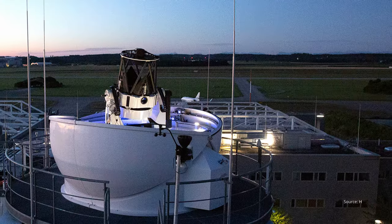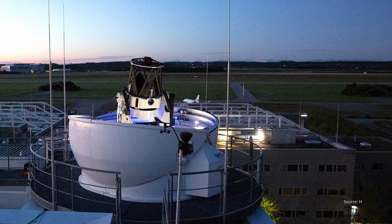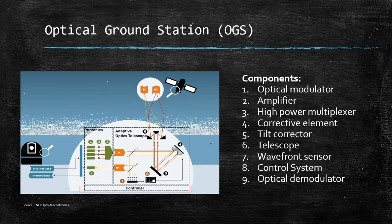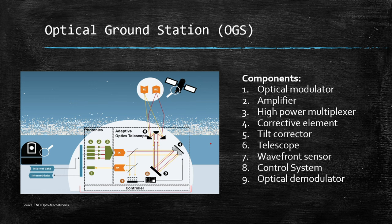The Optical Ground Station, or OGS, is an essential hub for laser communication with spacecraft. It's a sophisticated system that both transmits and receives optical signals, forming a critical link between Earth and space assets. The key components of an OGS include: the Optical Modulator, which modulates the light beam with the data to be transmitted, encoding information onto the laser beam sent to the spacecraft; the Amplifier, which strengthens the optical signal to ensure it can travel vast distances to space without losing data integrity; and the High Power Multiplexer, which combines several signals into one for efficient transmission through the optical medium.